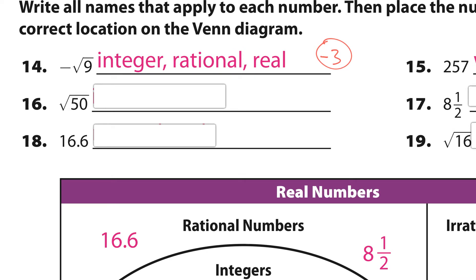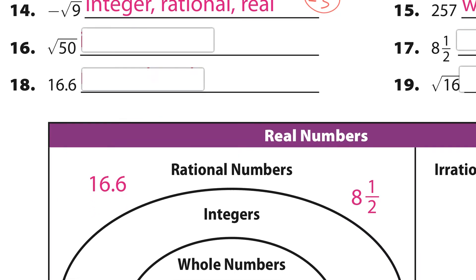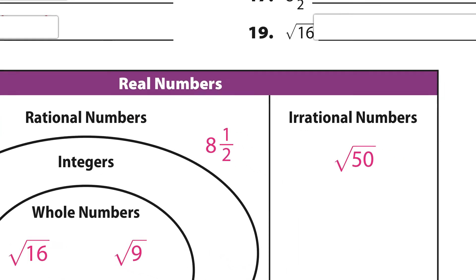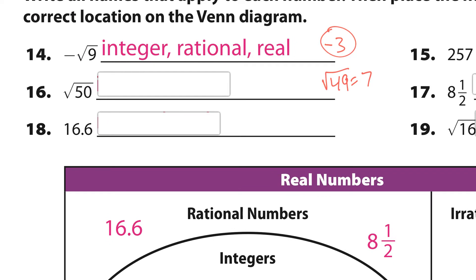Number 16: the square root of 50. Now, I know the square root of 49 is equal to 7. But the square root of 50 — I don't know — that ends up being an irrational number. So it's irrational, but it's also real. Irrational and real.